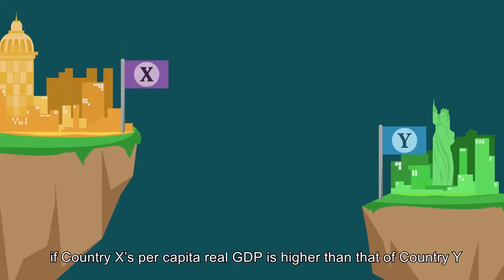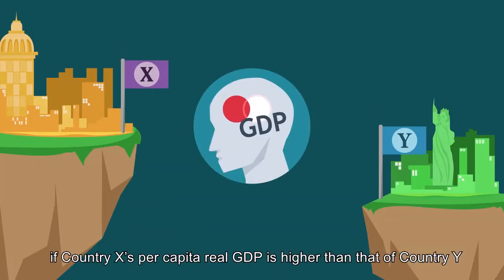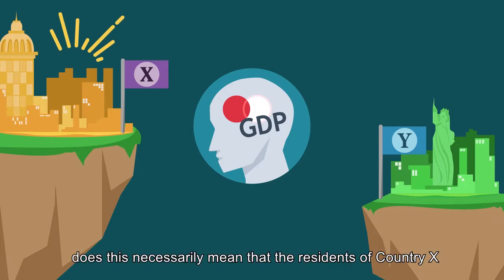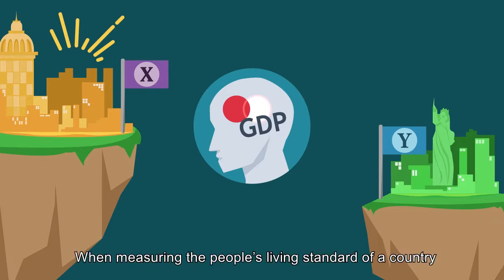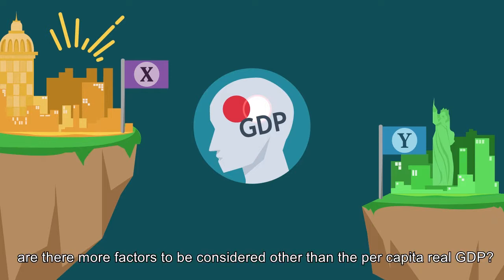However, if country X's per capita real GDP is higher than that of country Y, does this necessarily mean that the residents of country X enjoy a higher living standard? When measuring the people's living standard of a country, are there more factors to be considered other than the per capita real GDP?